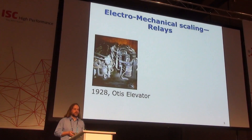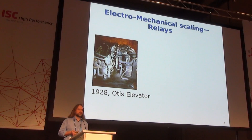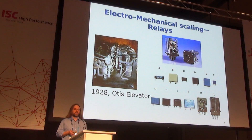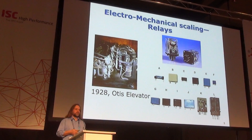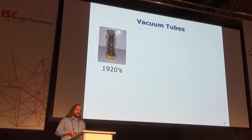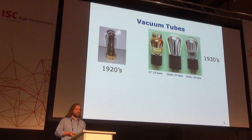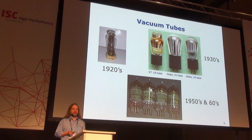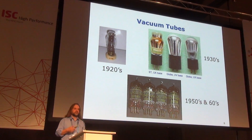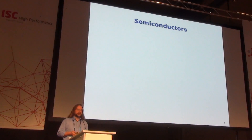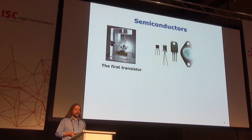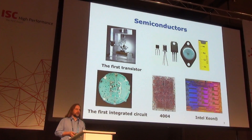Let's talk about scaling. You can look at electromechanical relays — starting in 1928 with the Otis Elevator, a large physical construct, versus what we have today — very different. This is the effect of scaling over 70, 80 years. It continues to get better. You can also look at vacuum tubes from the 20s to the 30s to audio favorites. And on the semiconductor front, you've got the first transistor, then what we're doing with it today, which ultimately led to the integrated circuit, and in turn to things like the Intel processor family.